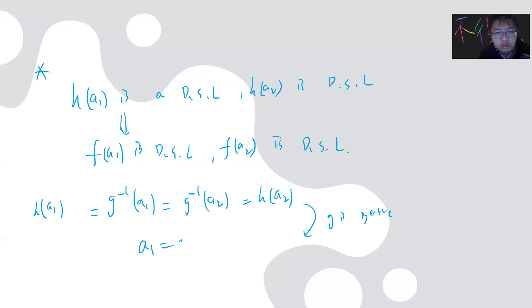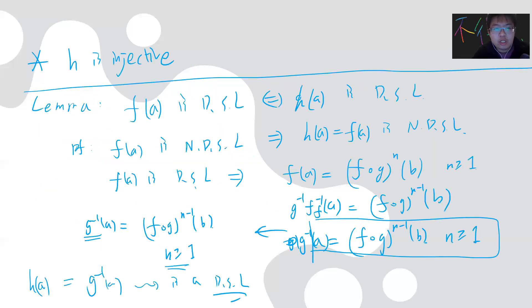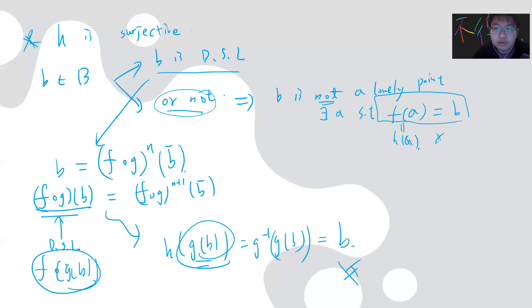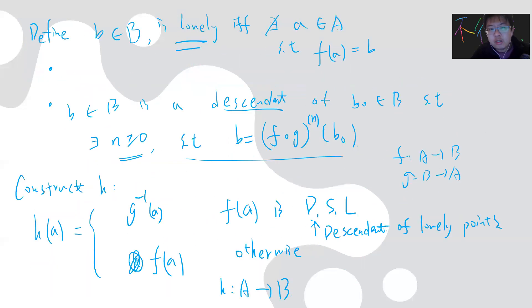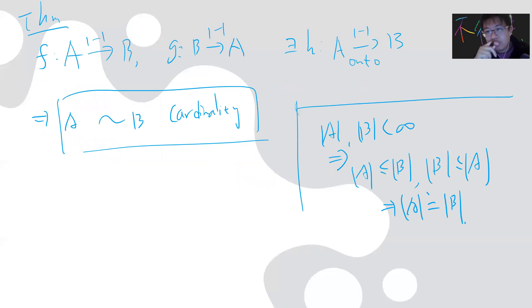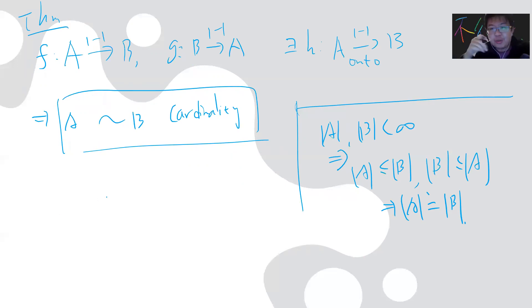Once we have all this, we've proved that h is injective, surjective, and well-defined, which proves the original Cantor-Bernstein-Schroeder theorem. There are proofs where you draw lots of diagrams and try to shrink the sets, but I think this abstract proof is much more beautiful. See you guys in the next video.